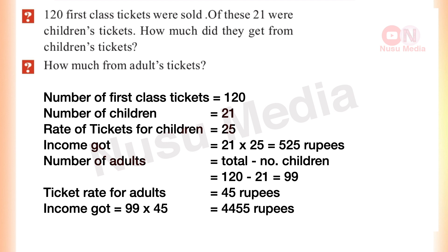If you have 21 into 25, then you have the total for first class tickets. This is the number of adults. The ticket rate is 45 rupees. The total income from first class is 4,455 rupees.